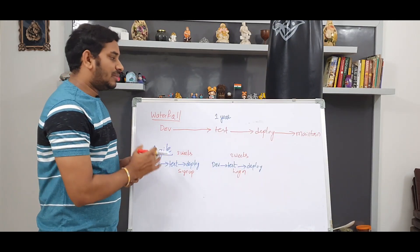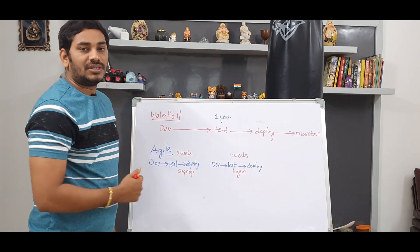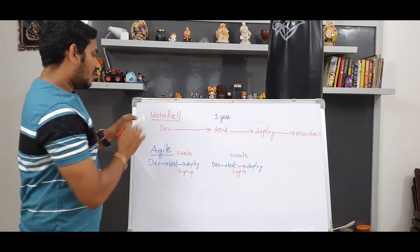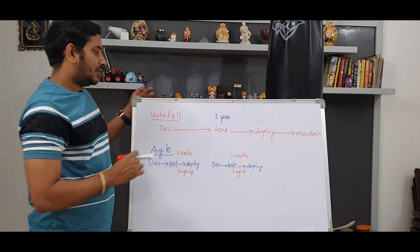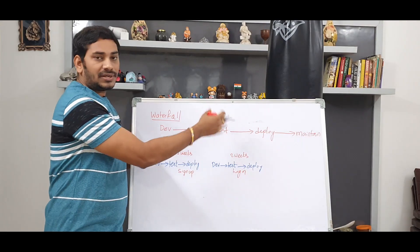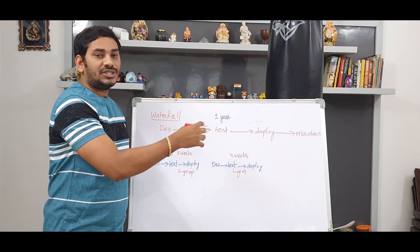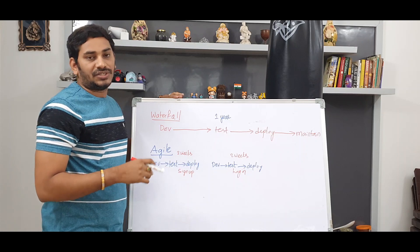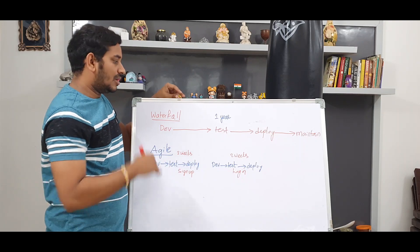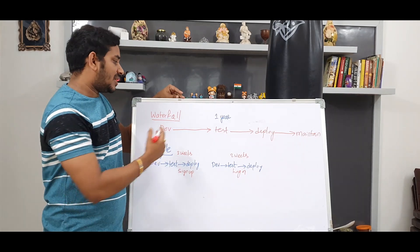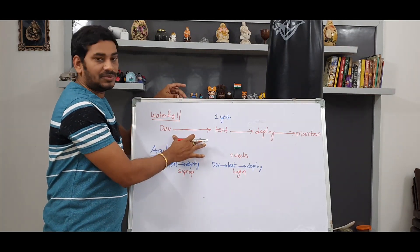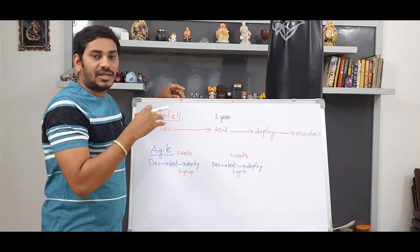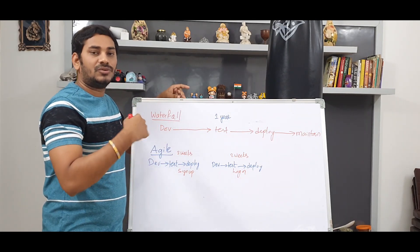Let's talk about the first process of DevOps - starting with Waterfall. In Waterfall, you develop, test, and deploy, then start maintenance. If you want to develop over a six month timeline, you develop over six months. There is no urgency or flexibility in this model.